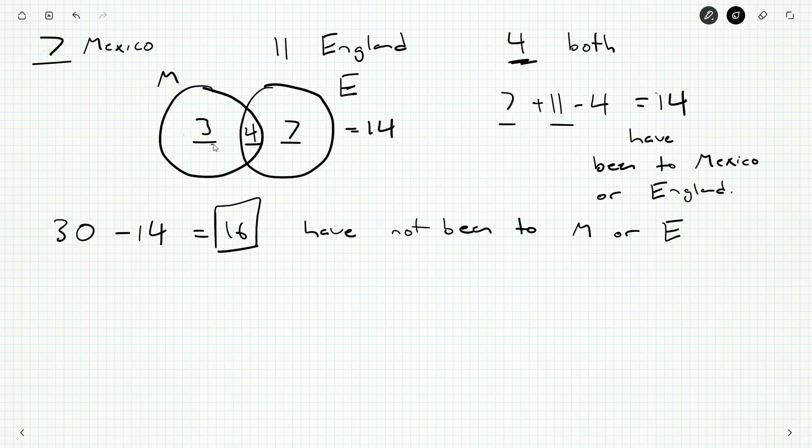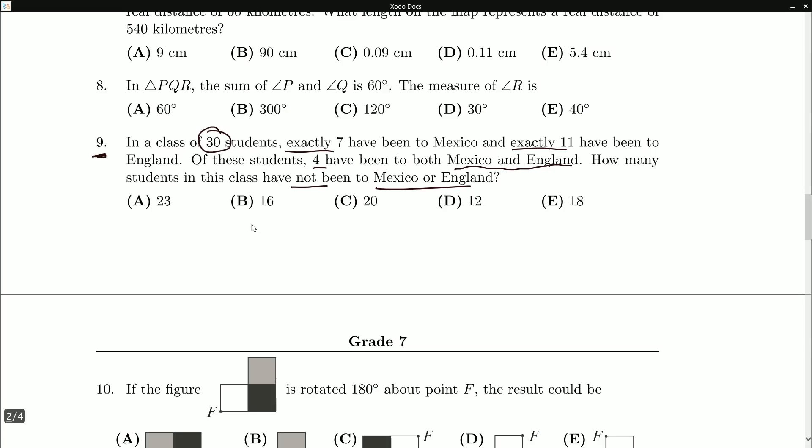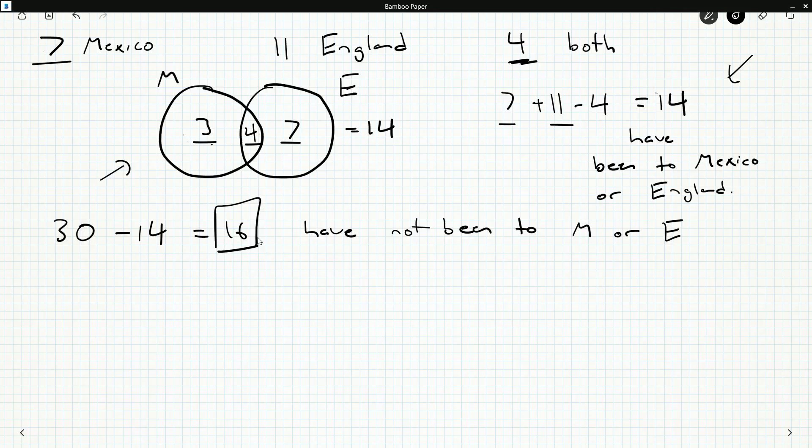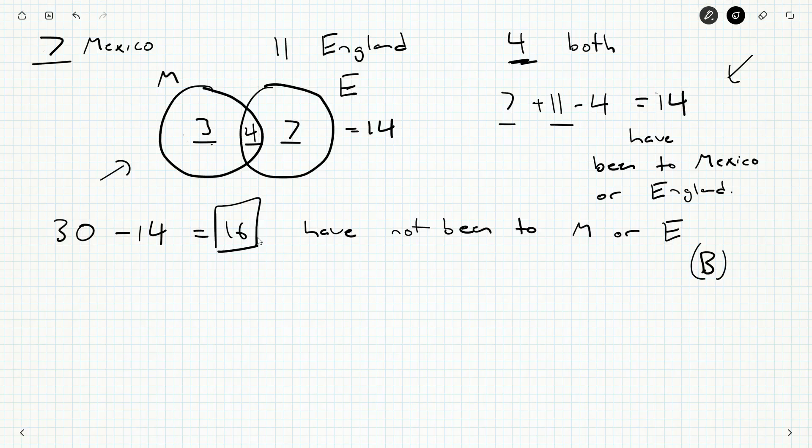So whether or not you use set theory formulas, if you're a super advanced student, whether or not you use Venn diagrams, because you like the visual representation and you're used to them, or whether or not you just reason your way out of the question and account for double counting, we can still get our answer of 16. 16 leads us to an answer of B. Well, there we go. And we're going to find out in the next video with question number 10, whether question 10 can fit in the remaining space on this page. Place your bets now.